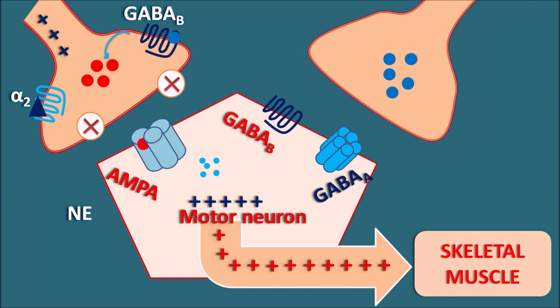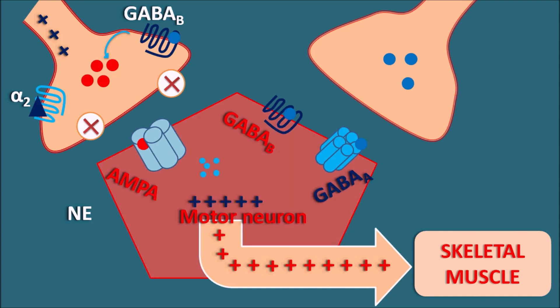GABA can also act postsynaptically on motor neurons. It can bind to GABA-B receptors, producing a slow modulatory inhibitory response, or it can bind to GABA-A receptors, producing inhibition by opening chloride channels. Because of these two actions, GABA inhibits the motor neuron, preventing skeletal muscle contraction. Motor activity is therefore controlled mainly by alpha-2 receptors, GABA-B receptors, and GABA-A receptors.